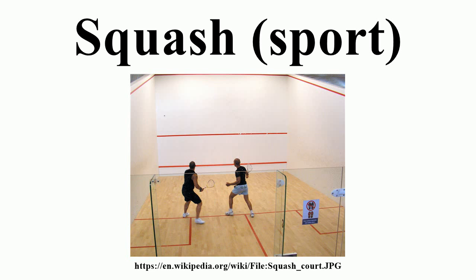The back wall, which typically contains the entrance to the court, has the smallest playing surface. The outline runs along the top of the front wall, descending along the side walls to the back wall. Shots struck above or touching the outline on any wall are out. The bottom line of the front wall marks the top of the tin, a half-metre-high metal area, which if struck means the ball is out — analogous to the net in other racket sports such as tennis. The middle line of the front wall is the service line and is only relevant during serves.